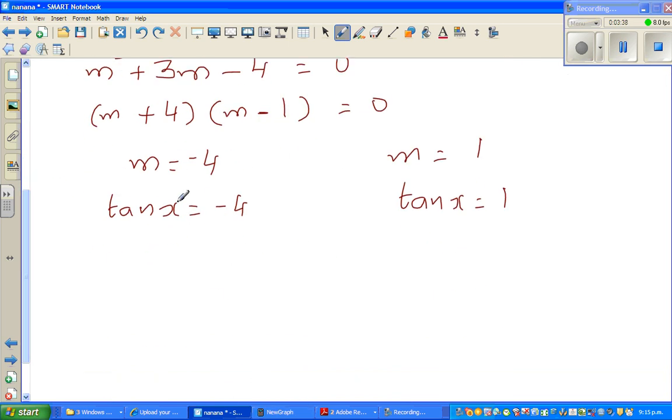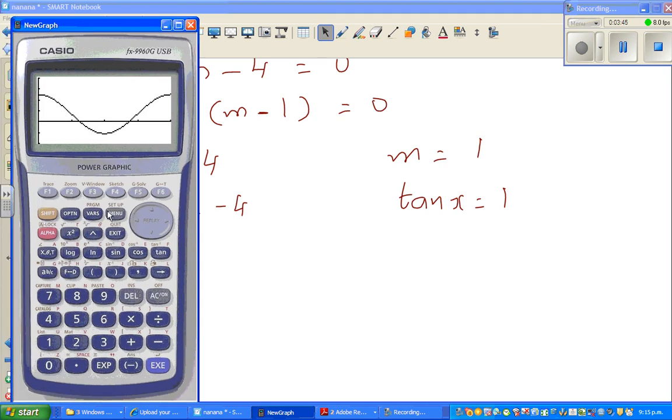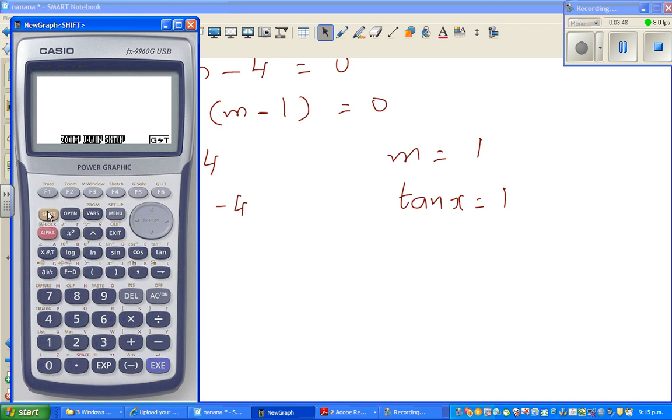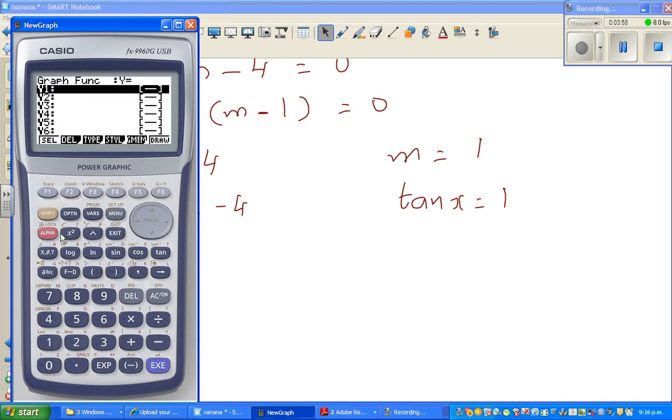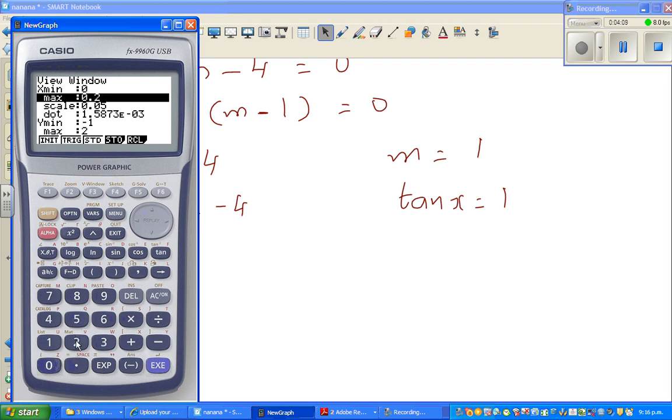Tan has a period of 180 degrees or π radians. I'm going to graph this on my calculator. First, I have to check my setting, whether it's in radians. It's already in radians, so that's fine. Now you go to graph and type in tan x. I want the scale from 0 to 2π, and I want y values like -4 and 1, so I'll put the y minimum as -5 and y maximum as plus 5. A scale of 1 would do. This is your tan graph.